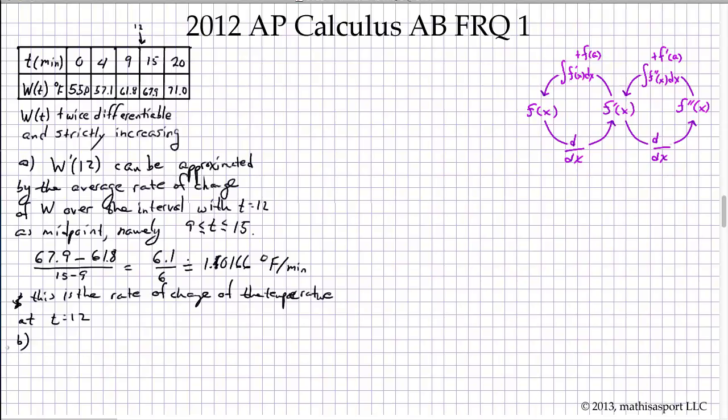Part B asks us to evaluate and interpret the integral from 0 to 20 of w prime of t dt. Well, here's where the fundamental theorem is very important, because they're asking us to find the integral of this function. Because it's a definite integral, the integral of this function is simply the difference between the values of this function at the two endpoints in question.